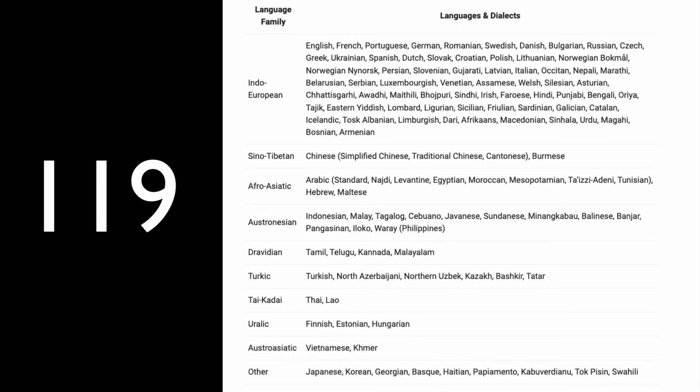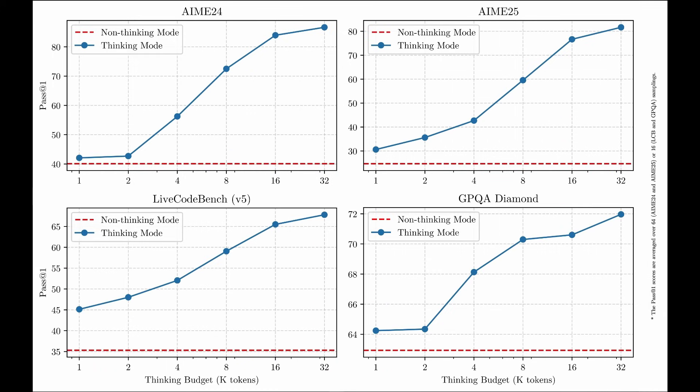Another unique feature of Qwen3 is hybrid thinking. Qwen3 allows you to choose the reasoning style — you can toggle between fast shallow responses or deep step-by-step reasoning. This is like switching between ChatGPT and Claude's thinking mode and non-thinking mode depending upon your task.